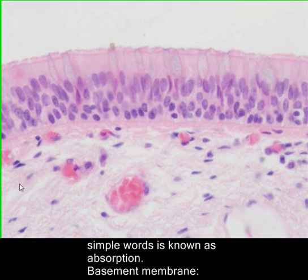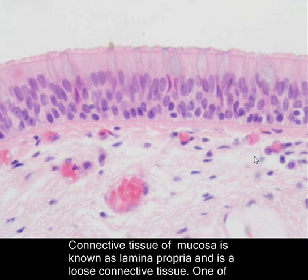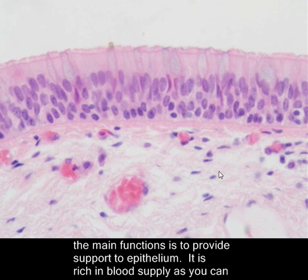Lamina propria — the connective tissue of the mucosa — is known as lamina propria and is a loose connective tissue. One of its main functions is to provide support to the epithelium. It is rich in blood supply.